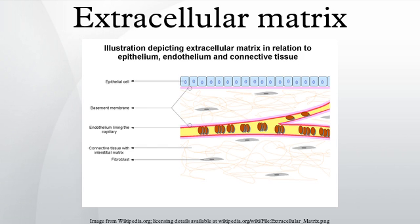Chondroitin sulfates contribute to the tensile strength of cartilage, tendons, ligaments, and walls of the aorta. They have also been known to affect neuroplasticity. Keratin sulfates have a variable sulfate content and, unlike many other GAGs, do not contain uronic acid. They are present in the cornea, cartilage, bones, and the horns of animals.